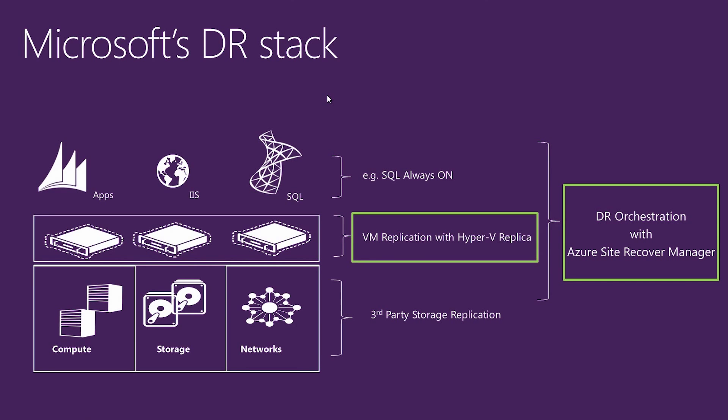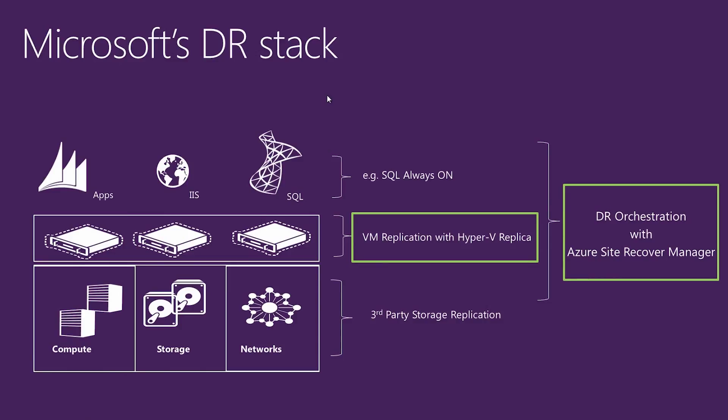When we look at what Microsoft offers from a disaster recovery stack today, we look at integrated applications such as IIS, websites, and SQL. A lot of these have inbox solutions for disaster recovery, such as DFSR for file replication, website failover, network load balancing for sites, or solutions such as SQL Always On. For solutions outside that stack, we need to look at actually replicating these machines — typically virtual machines — from one site to another, and find a solution to do that effectively.